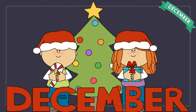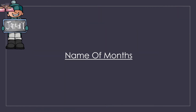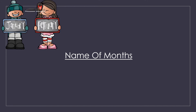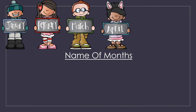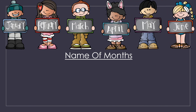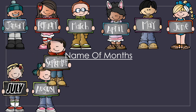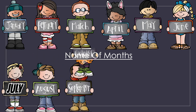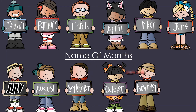How many months in a year? Twelve months. Let's do it again — name of the months: January, February, March, April, May, June, July, August, September, October, November, December.